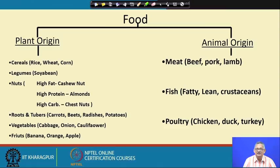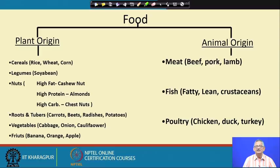We also consume vegetables like cabbage, onion, and cauliflower, and fruits like banana, orange, and apple. By and large, in our country, all products made from plant origin are called vegetarian food. The other category is non-vegetarian, which comes under animal origin.